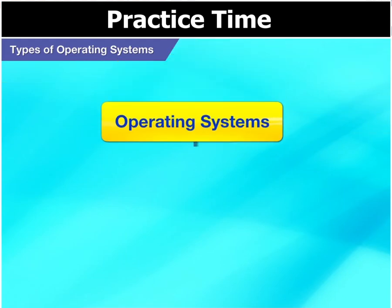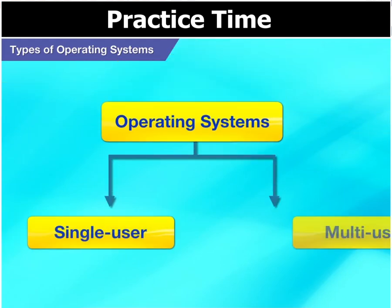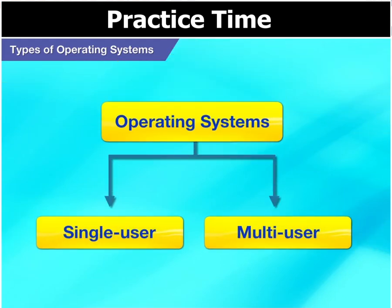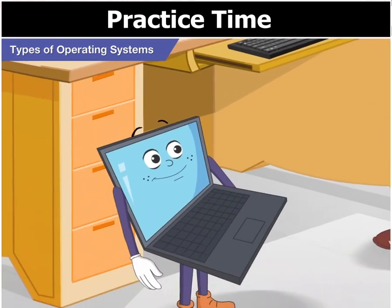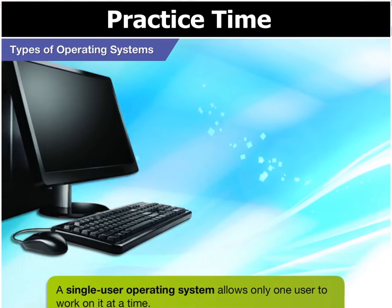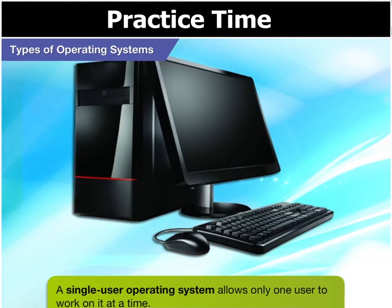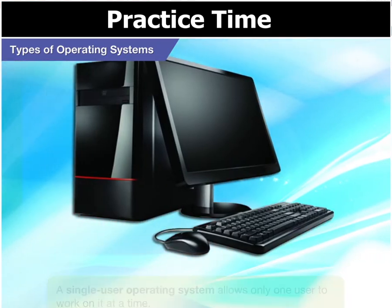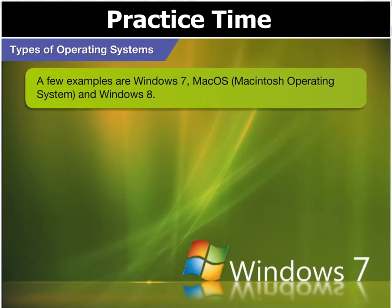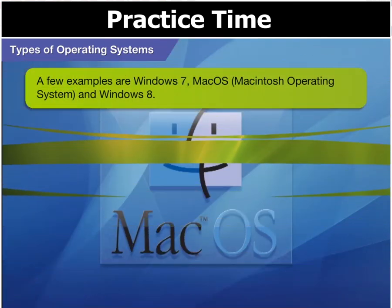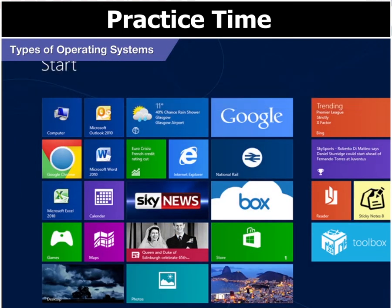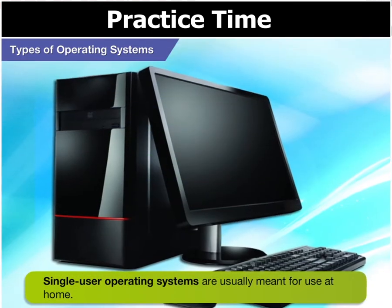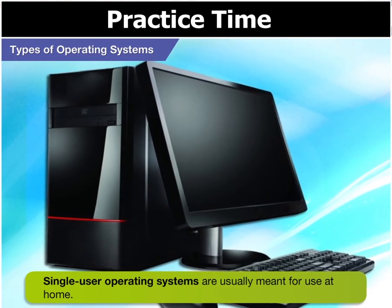Now, operating systems are of two types: single user and multi-user. A single user operating system allows only one user to work on it at a time. A few examples are Windows 7, Mac OS or Macintosh operating system and Windows 8. Single user operating systems are usually meant for use at home.